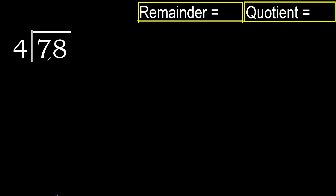78 divided by 4. Start with 7 — 4 multiplied by which number is nearest to 7 but not greater? 4 multiplied by 2 is 8, which is greater. 4 multiplied by 1 is 4, which is not greater. 7 minus 4 is 3.